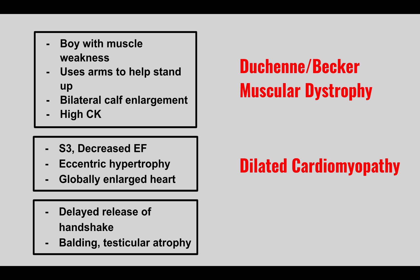The next condition: delayed release of handshake, balding, and testicular atrophy. This is myotonic dystrophy — a trinucleotide repeat disease with a CTG repeat, causing delayed relaxation of the thenar and hypothenar muscles. Vignettes may mention delayed release of handshakes or difficulty releasing a doorknob. Being a trinucleotide repeat disorder, you can get anticipation, where the condition presents earlier and with more severe symptoms in successive generations.